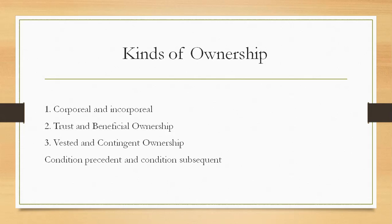As between the trustee and beneficiary, the property belongs to the latter and not the former. But as between the trustee and third persons, the fiction prevails and the trustee is deemed to be the legal owner of such property. The trustee is clothed with the rights of his beneficiary and is enabled to represent him in dealings with the world at large.